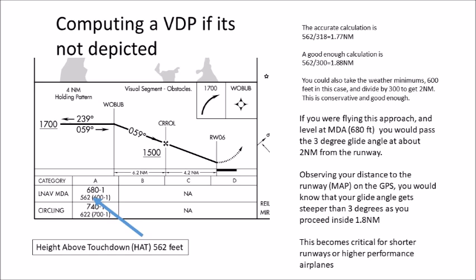If I look at the height above touchdown, which in this case is 562 feet, I can do the calculations. I can find that at 1.77 nautical miles from the runway I will intersect a three-degree glide angle. To make things simple and perhaps slightly more conservative, we typically use the number 300 rather than 318 and divide the height above touchdown by 300. In this case we get 1.88 nautical miles, which is pretty close to 1.7 - it's just in the noise.